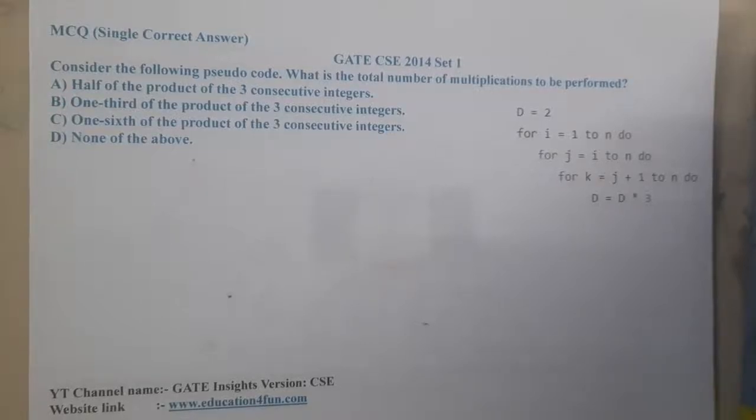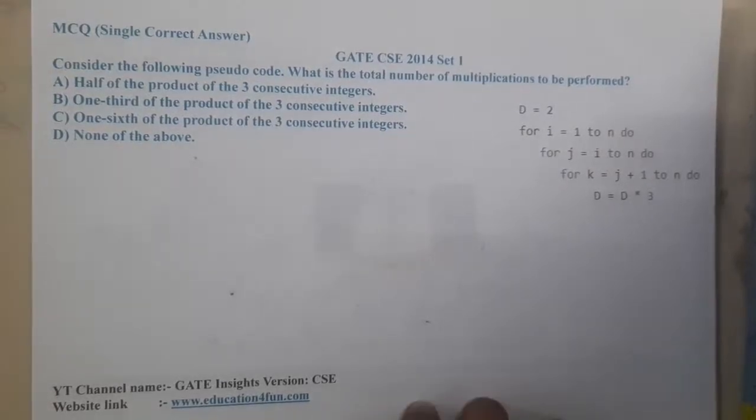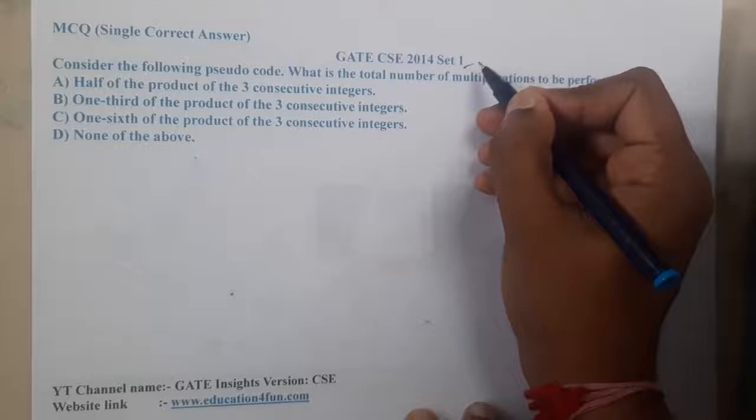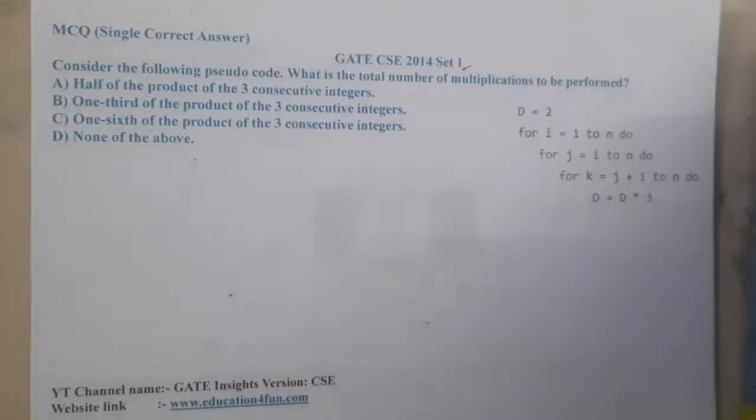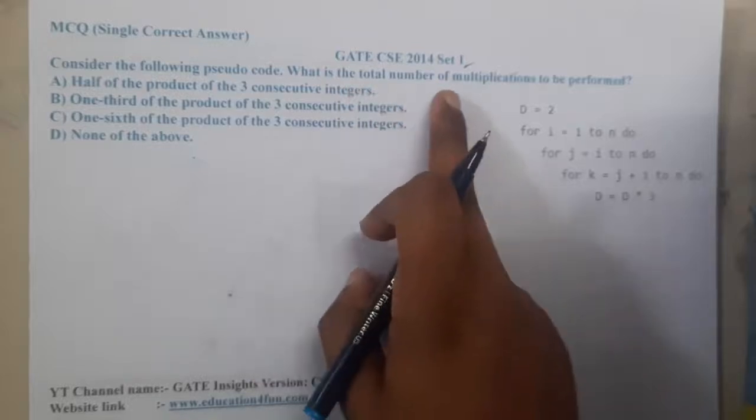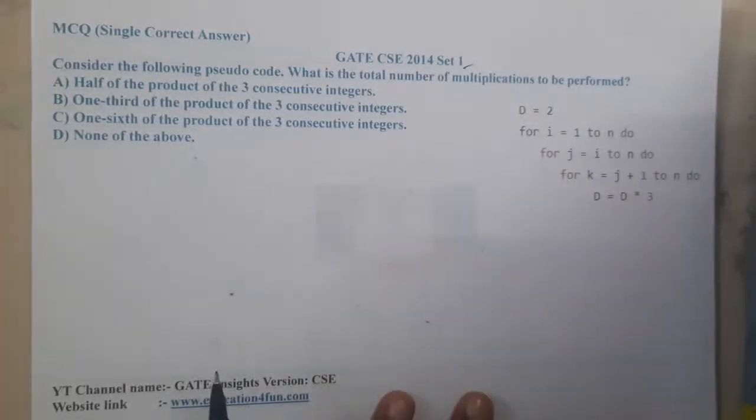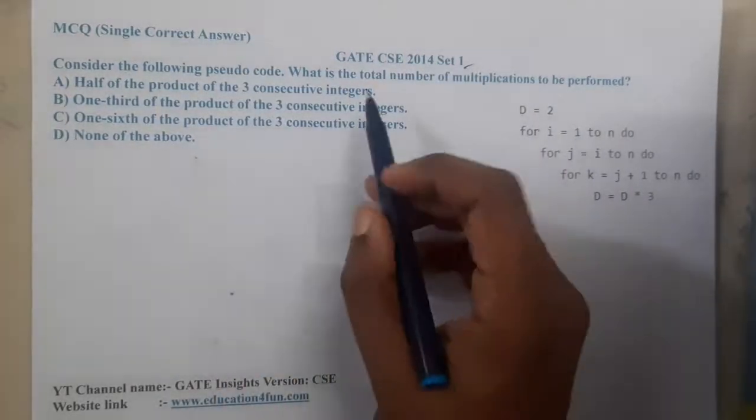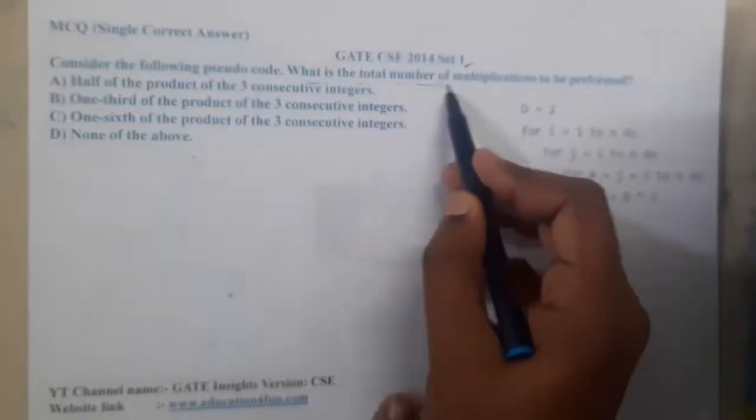Hello guys, we are back to the next lecture. In this lecture let us go through the next question. This question belongs to GATE CSE 2014 Set 1. The question is: consider the following pseudo code, what is the total number of multiplications performed?